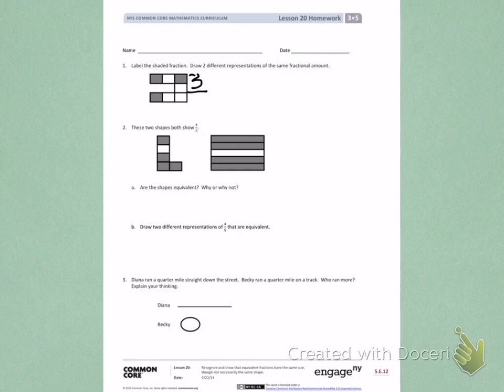There are 1, 2, 3, 4, 5, 6, 7 equal parts. This fraction is 3 sevenths shaded.